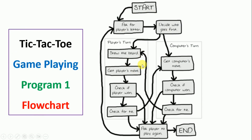This is how the flowchart for tic-tac-toe Program 1 looks. First, we ask for the players — the computer or human can choose between X and O. X always starts first. Assuming the human takes X and the computer gets O, the player is shown the board and makes their move. We then check whether the player has won. If they have, we ask whether they want to play another game; if yes, restart, otherwise end the program.